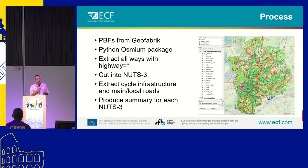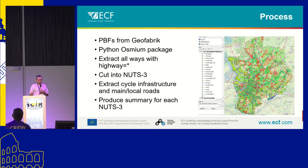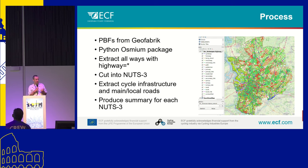Then we cut it into the NUTS-3 small regions. We extract the cycle infrastructure, and we extract the public road network, which we divide into main roads and local roads. Then we produce a summary for each of those NUTS-3 regions. This is an example of NUTS-3 around the small area of Antwerp.